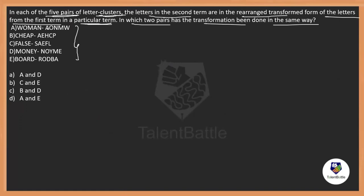Let us take option A. WOMAN is mentioned as A, O, N, M, W. Just to avoid the confusions, let me give the numbers. One, two, three, four, five. This is the position of the numbers, first of all. W is in the first position. O is in the second position. M is in the third position, like this.